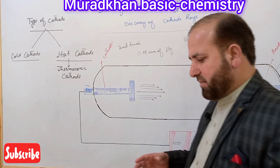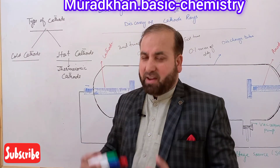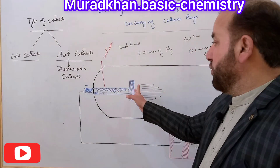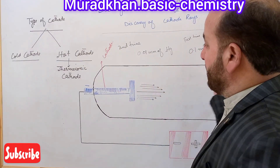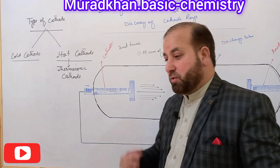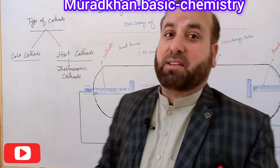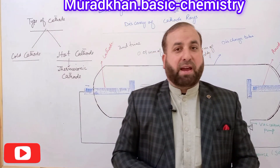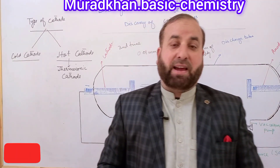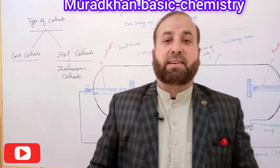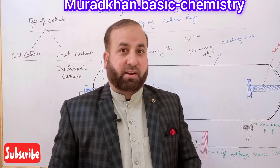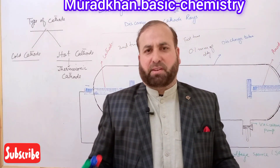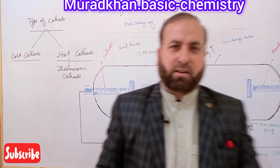In a hot cathode, the cathode is strongly heated electrically. As a result, emission of electrons occurs and they move straight towards the anode. In this hot cathode, which we use in the current environment, we use electric heat applied to the surface to cause emission of electrons.